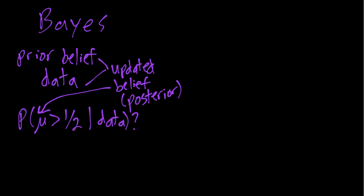From this after-sampling perspective — given the data that we actually observed — what do we think are different probabilities of different values of the mean?